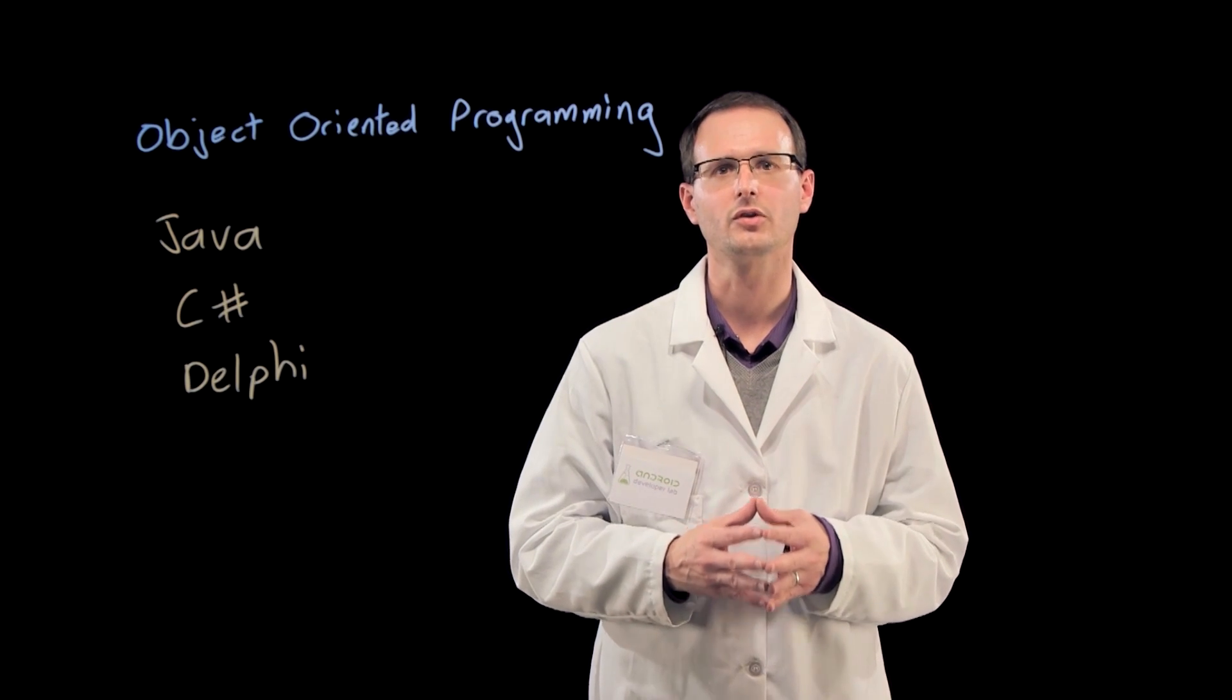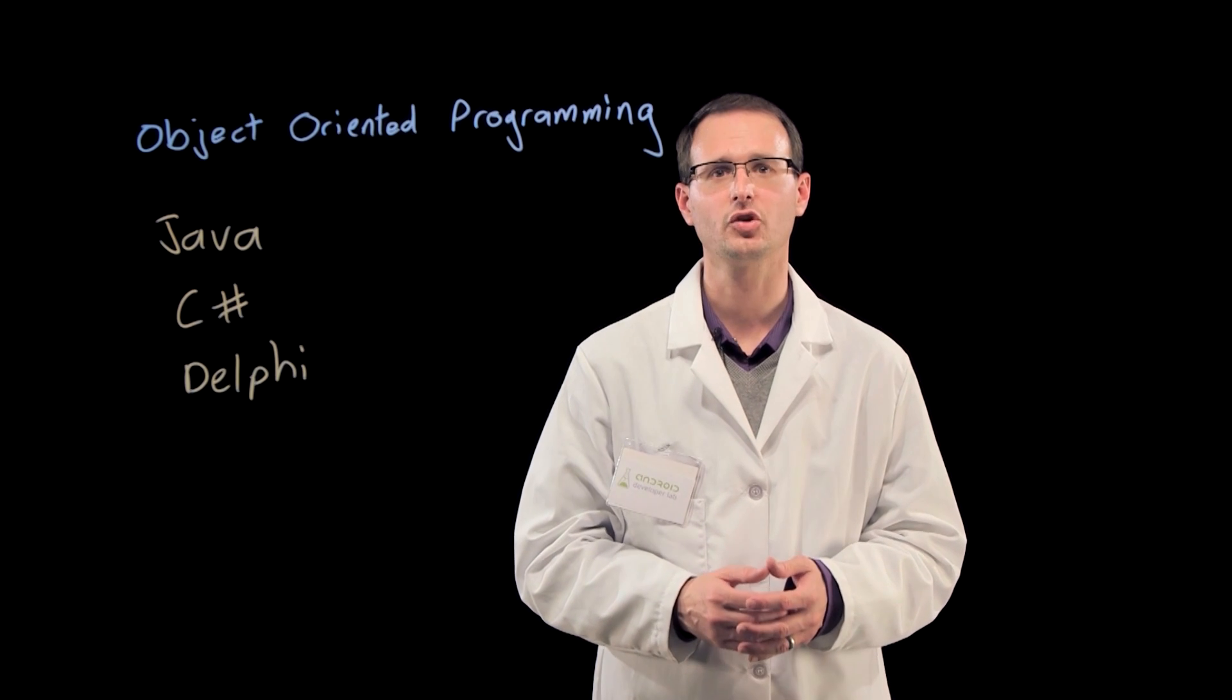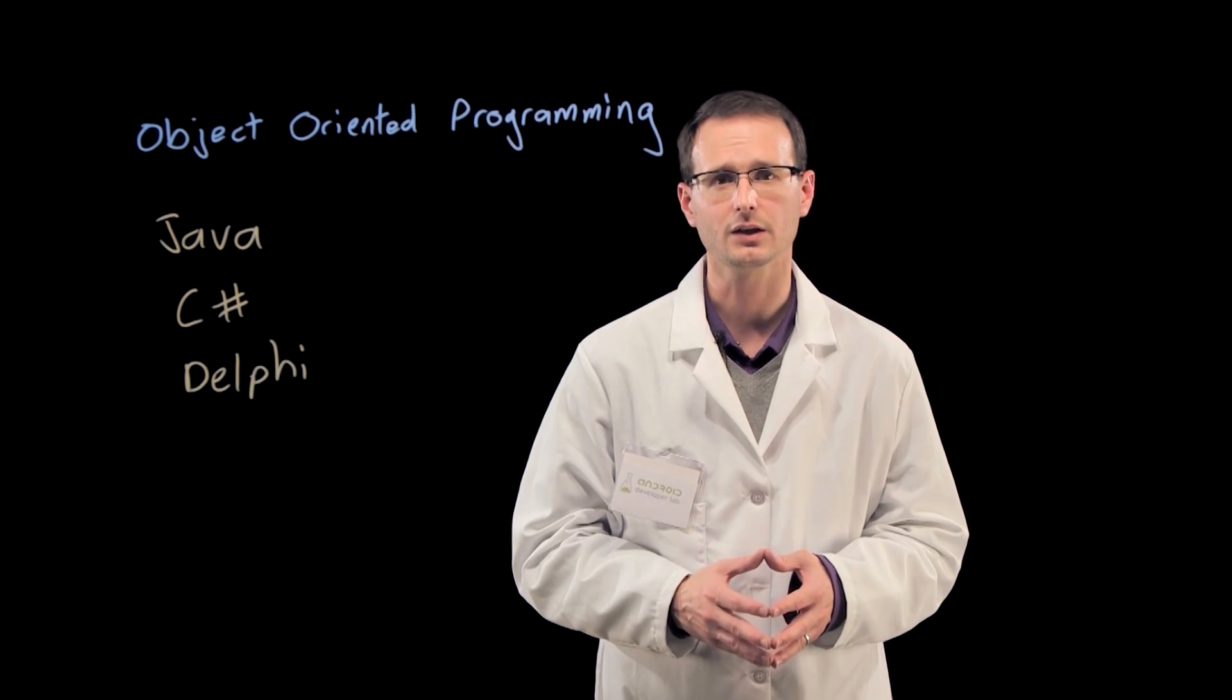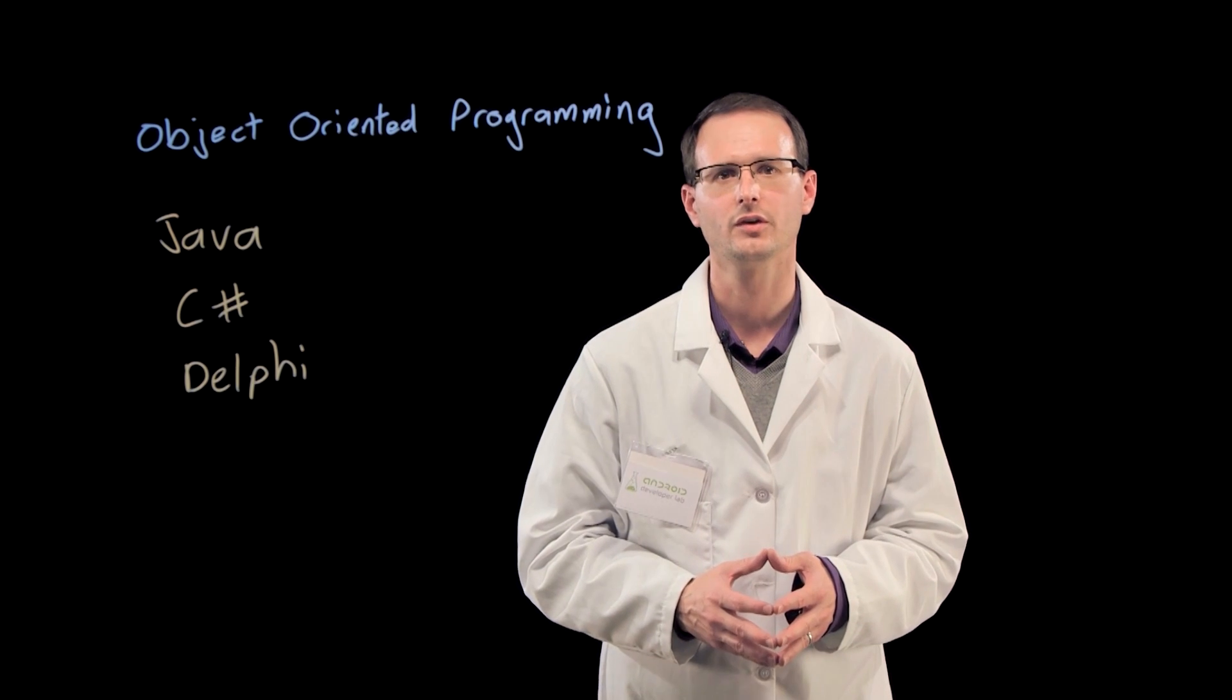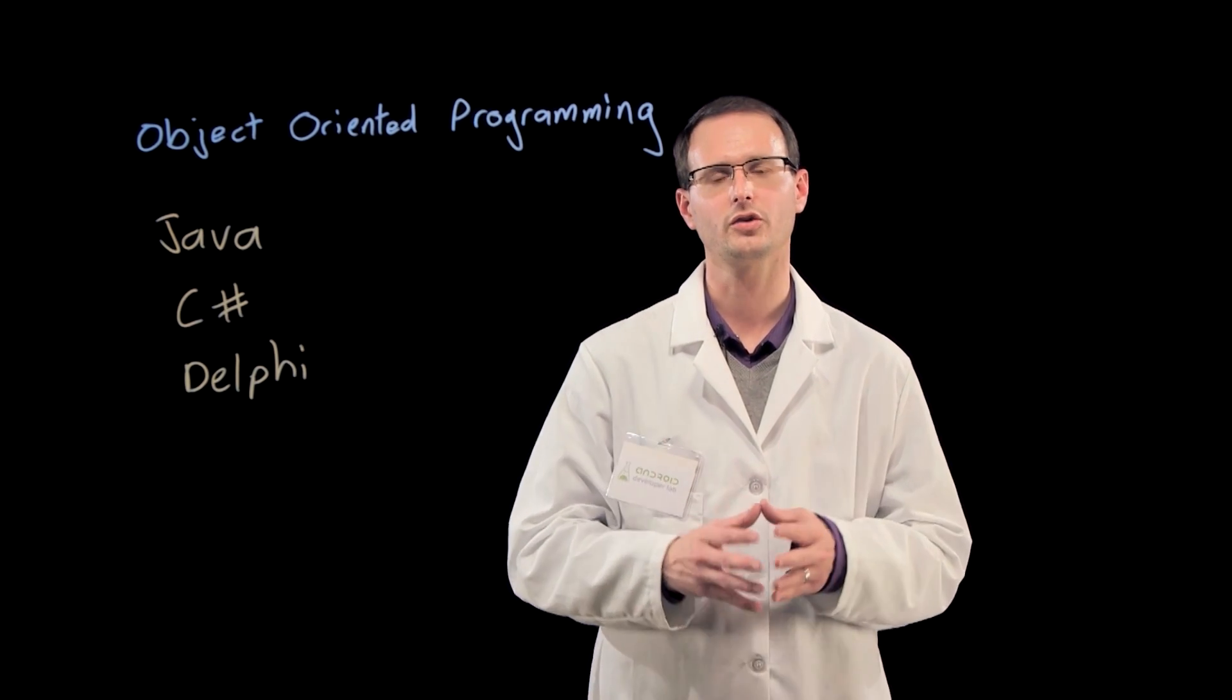As engineers, we're trained to map our experiences in one language or SDK into new ones, looking for patterns and shortcuts so we can get up to speed as quickly as possible. But mobile, and Android in particular, has some fundamental differences that mean some of our experience and intuition will actually make us worse mobile engineers.